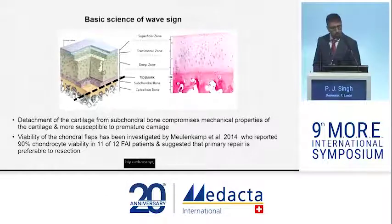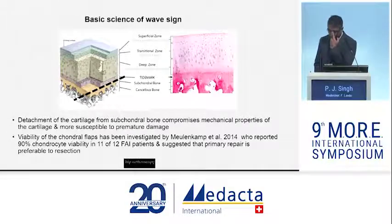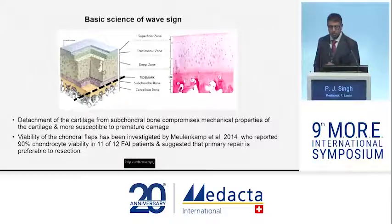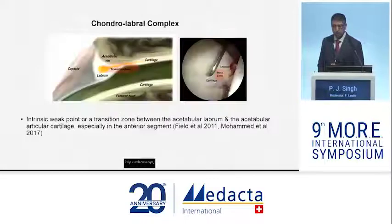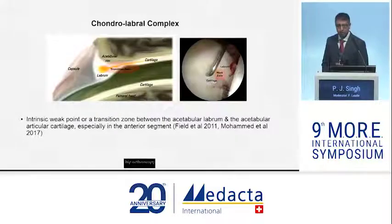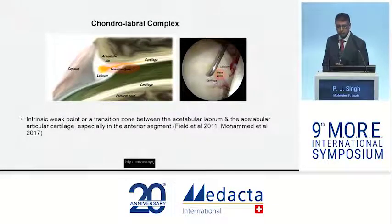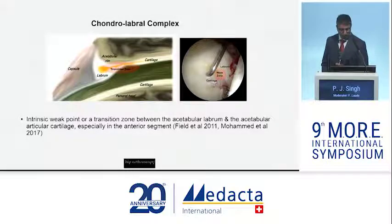There have been a number of studies undertaken. In one I cite, the viability of chondral flaps was assessed, and 90% chondrocyte viability was identified in 11 of the 12 hips assessed. This damage typically occurs at the chondrolabral junction, as described by Richard Field in 2011, which is an intrinsic weak point of the acetabular chondrolabral junction, particularly at the anterior aspect.